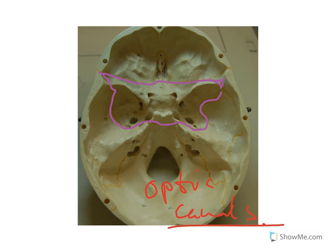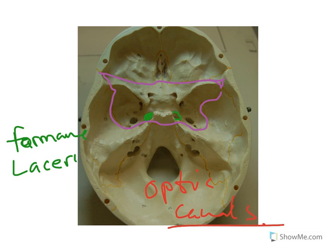Now I'm going to erase all that and use green to continue. Next to the sella turcica — I'll draw that in so you can see it — is the foramen lacerum. It's the hole on either side of the sella turcica: foramen lacerum.